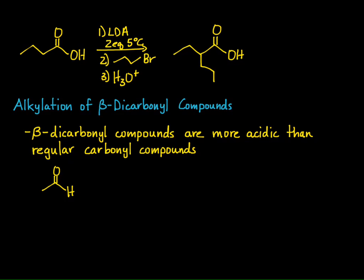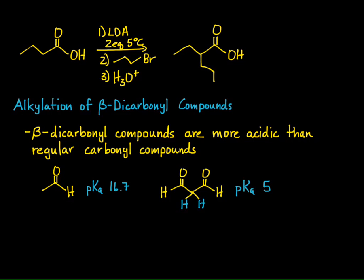To refresh our memory: the pKa of acetaldehyde is 16.7. A beta-dicarbonyl compound has two carbonyl groups, so if we look at the acidity of the alpha-hydrogens, we now have two carbonyls withdrawing electron density, and therefore the acidity of those alpha-hydrogens increases quite a bit. In fact, the pKa of those two hydrogens is 5 — so we've gone down substantially, making this almost as acidic as a carboxylic acid, which has a pKa around 4.5.